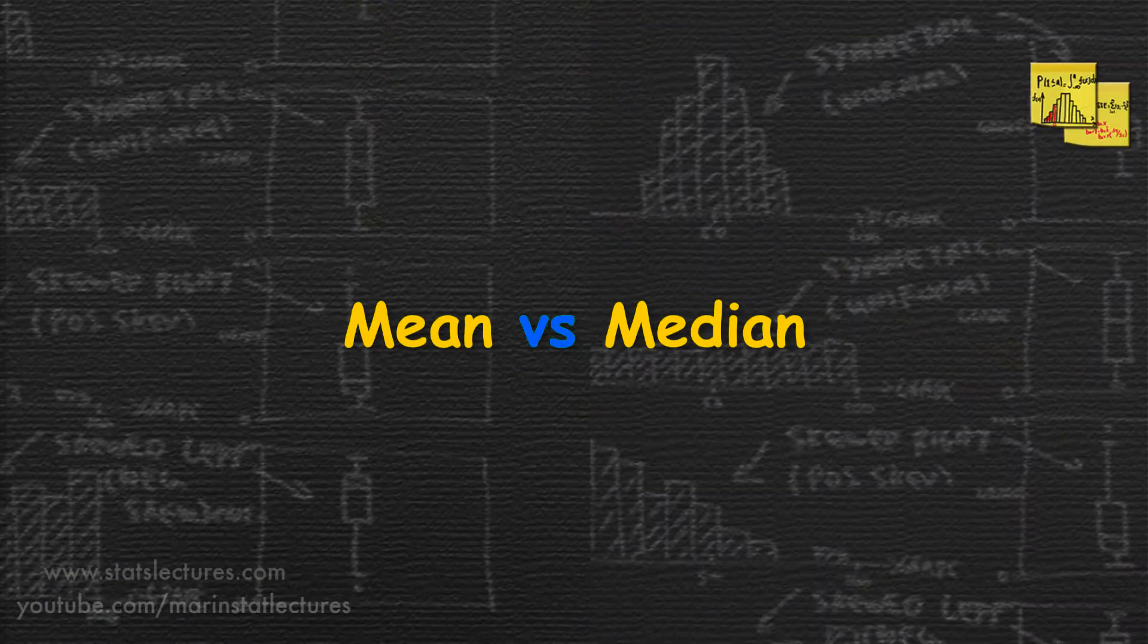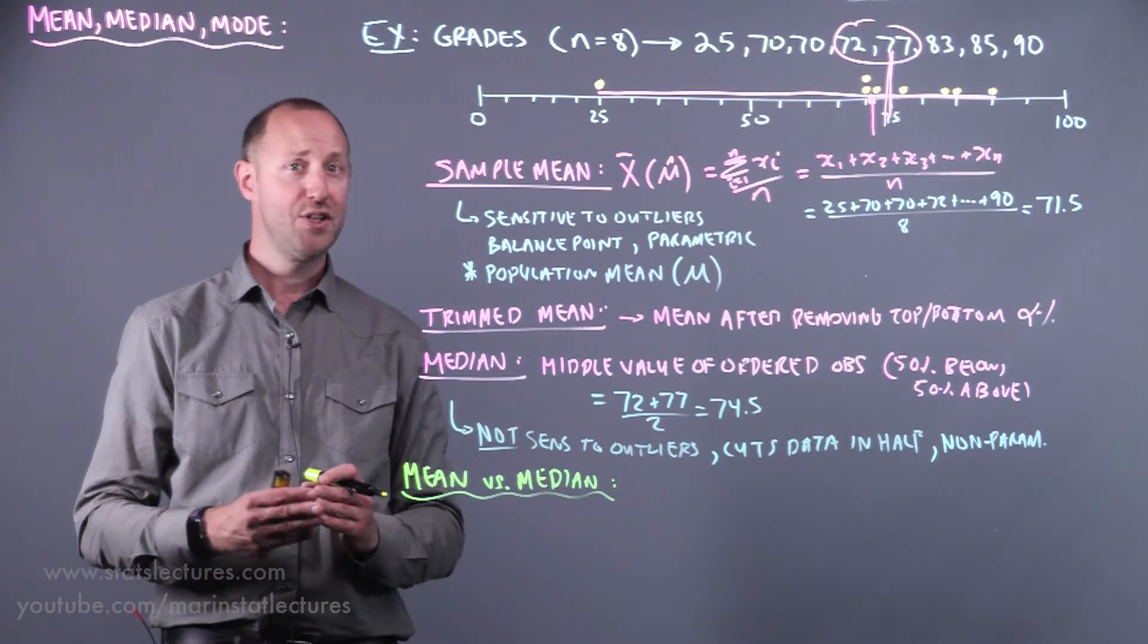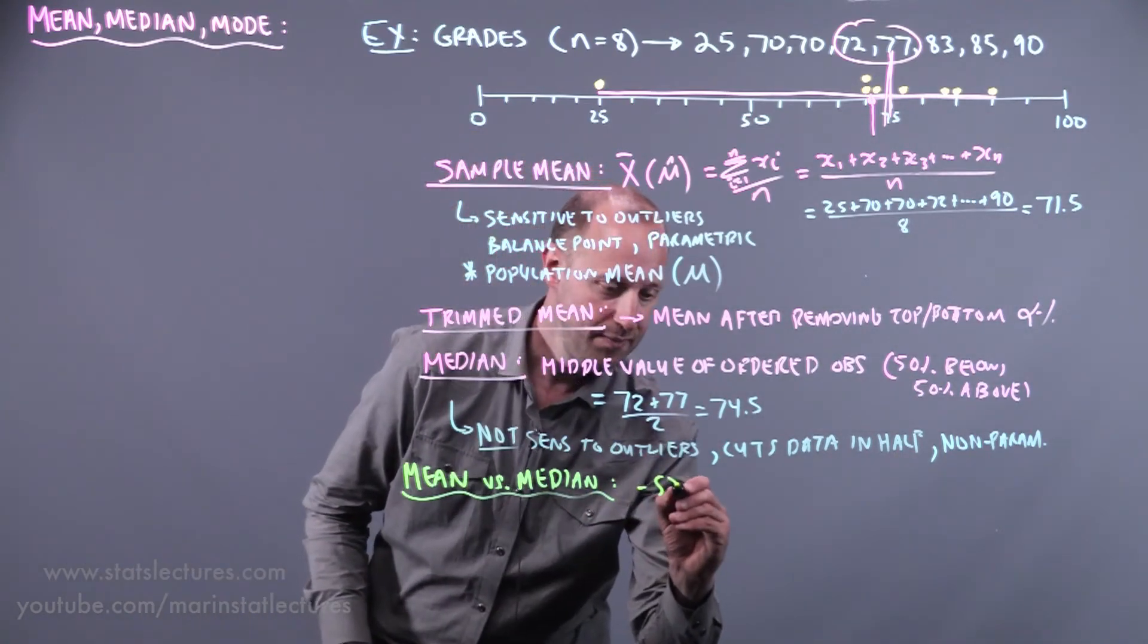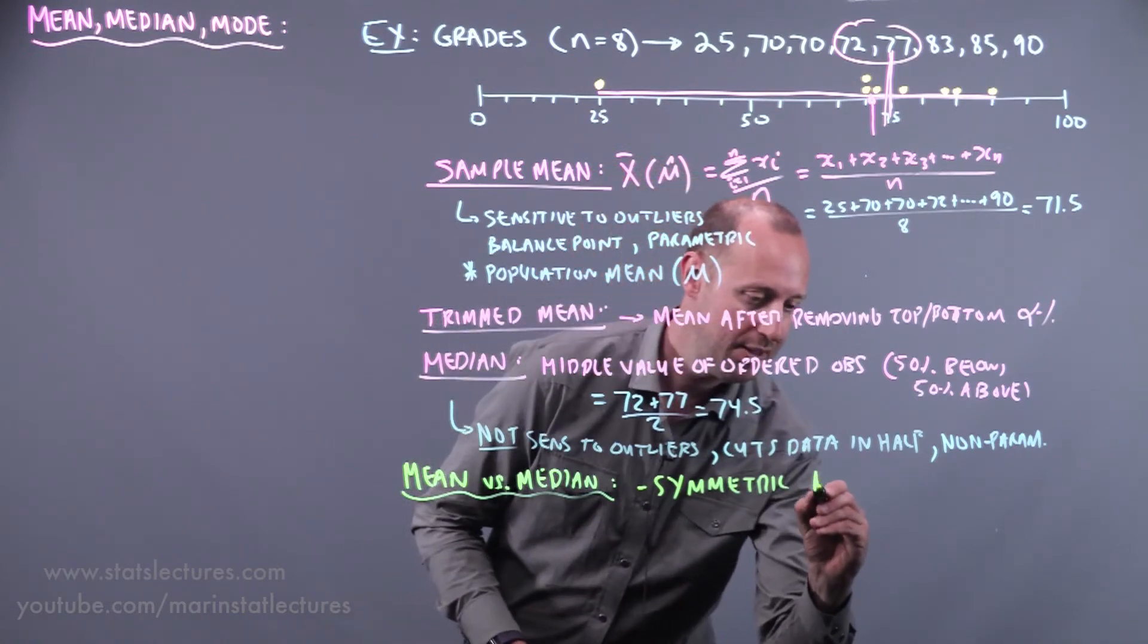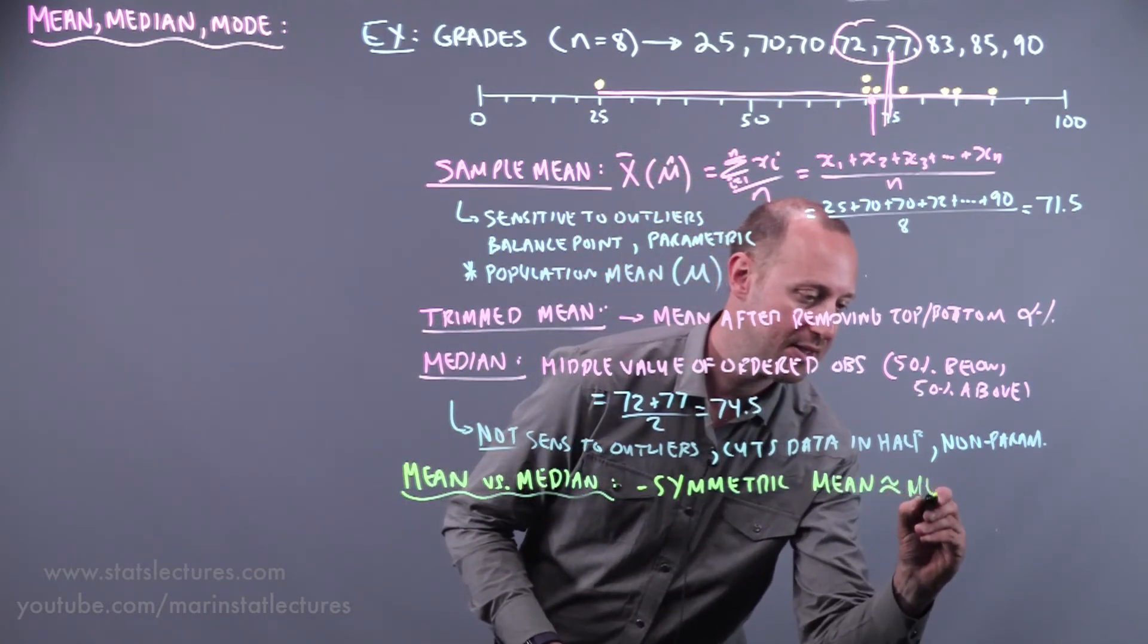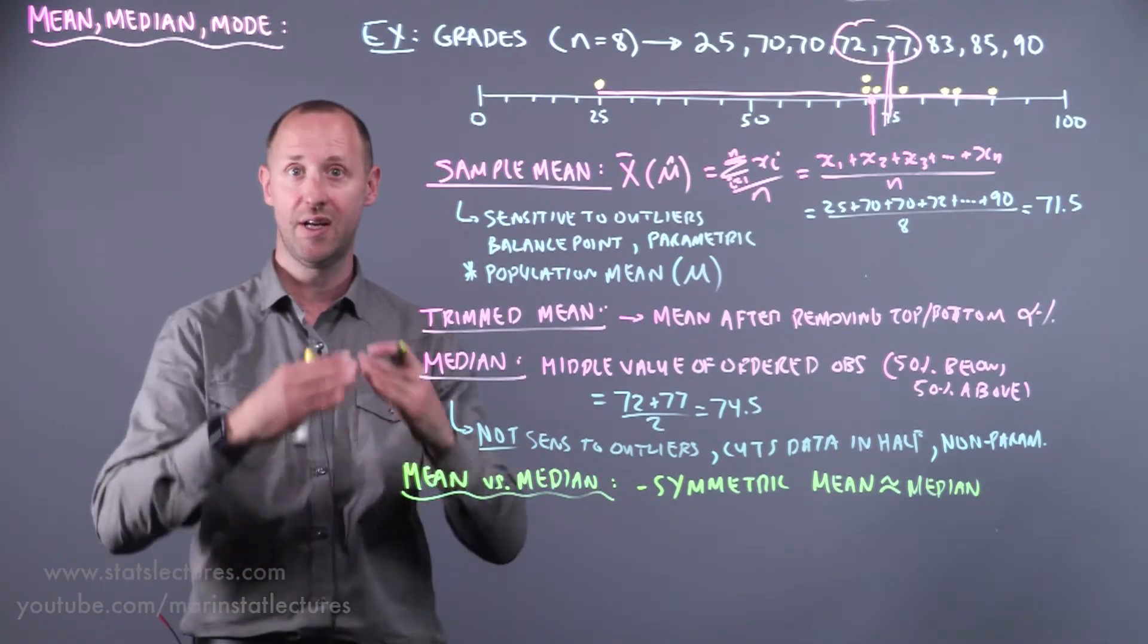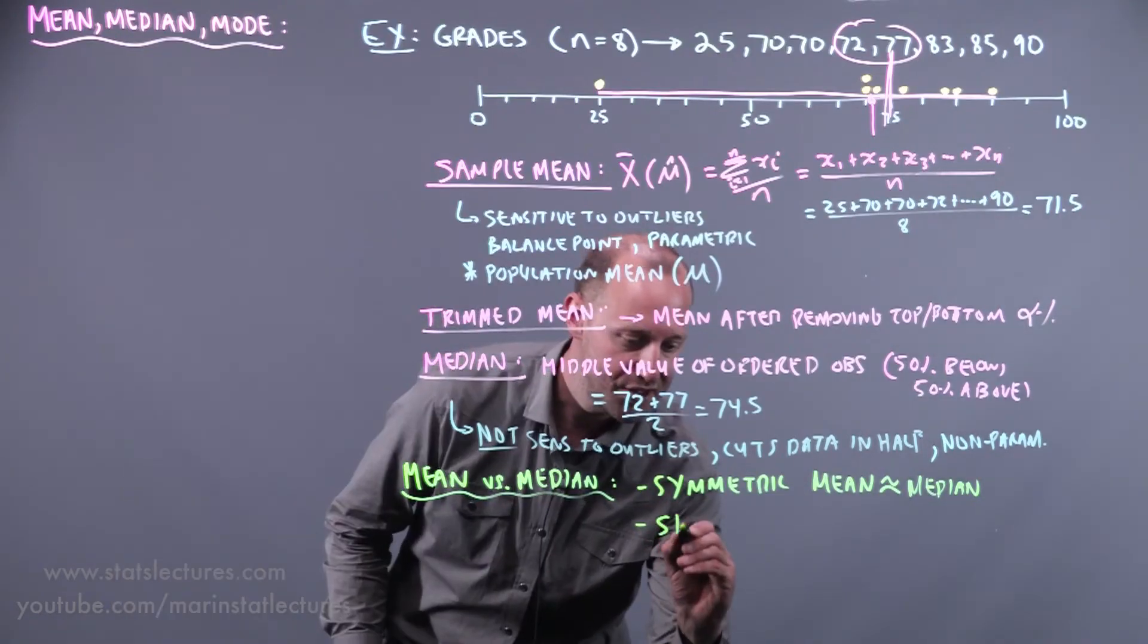Let's just take a moment to talk about mean versus median and how they compare. If a distribution is fairly symmetric, when a distribution is symmetric, the mean is roughly the same as the median. So the measure of central tendency is going to be the same using mean or median if the distribution is roughly symmetric around its center.